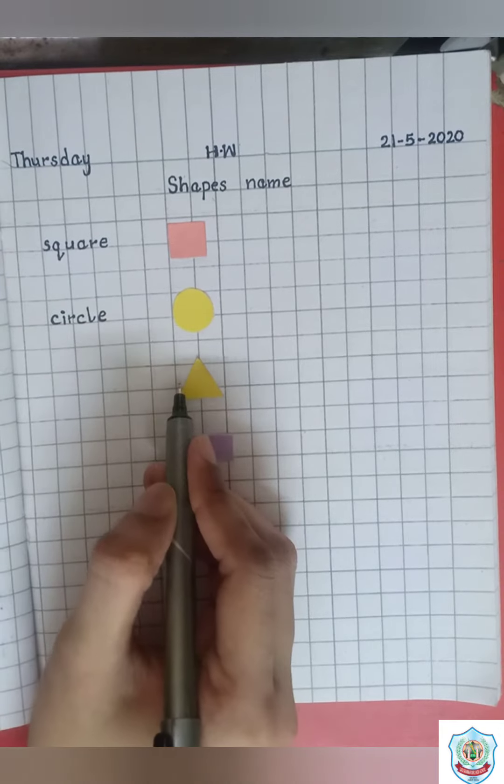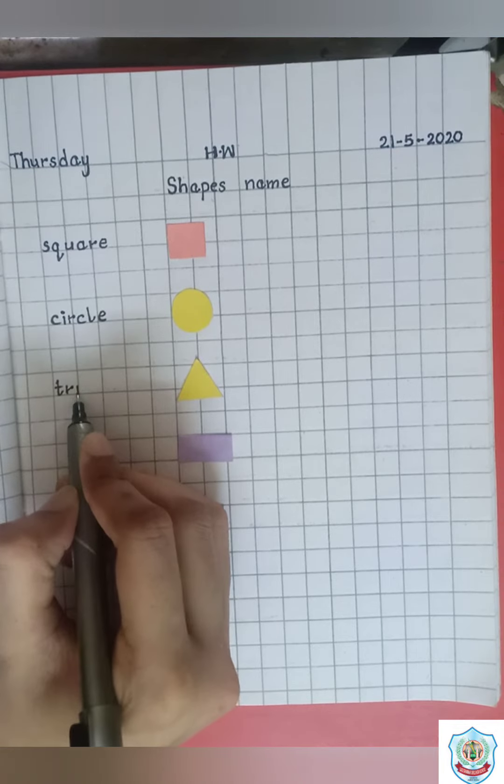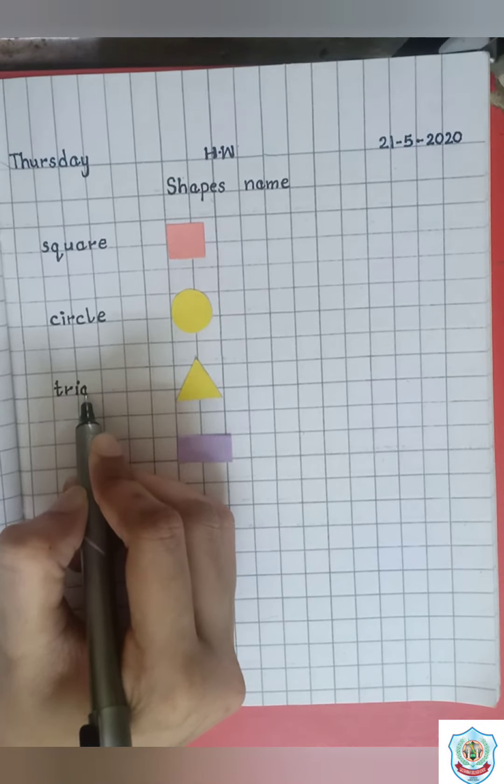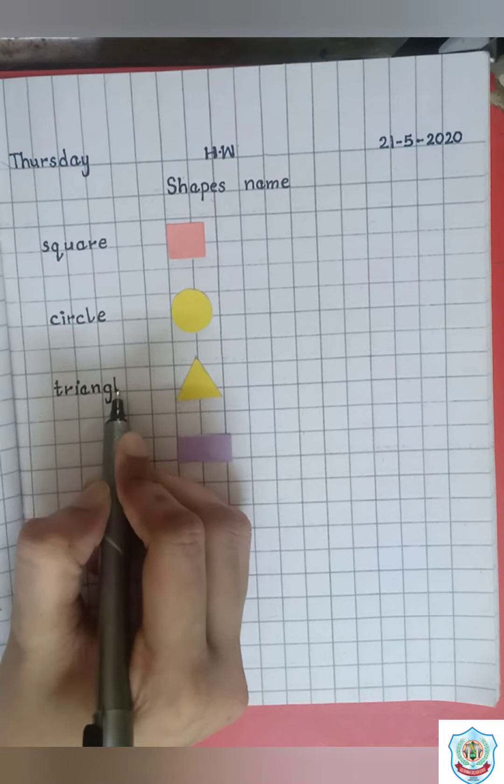The next one is triangle. T-R-I-A-N-G-L-E. Triangle.